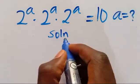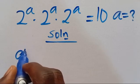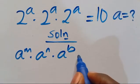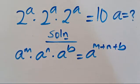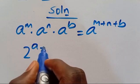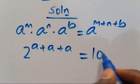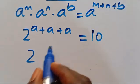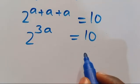Recall that when you have a to the power of m, multiplied by a to the power of n, multiplied by a to the power of b, this can be simplified as a to the power of m plus n plus b. Applying it here — they have the same base — we have 2 to the power of a plus a plus a, which equals 10.